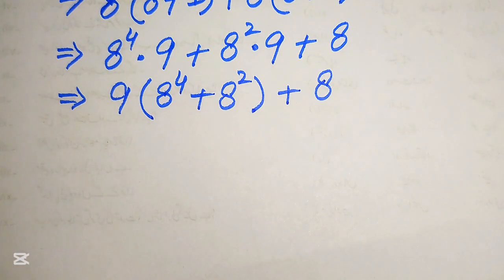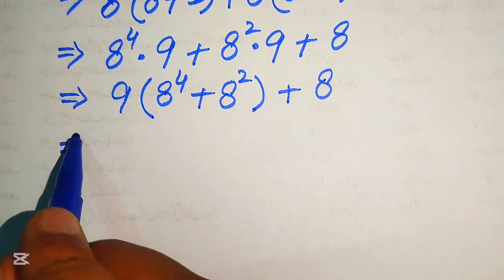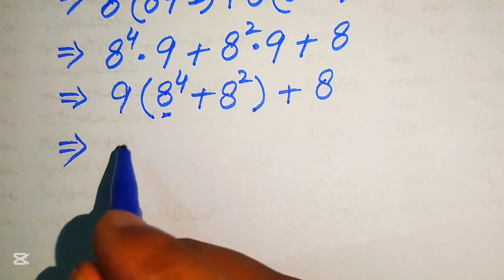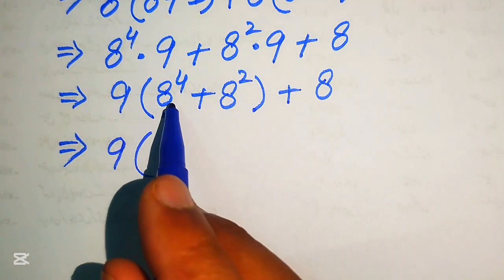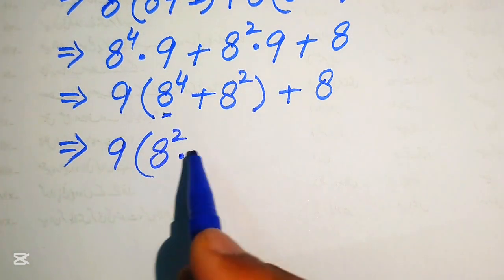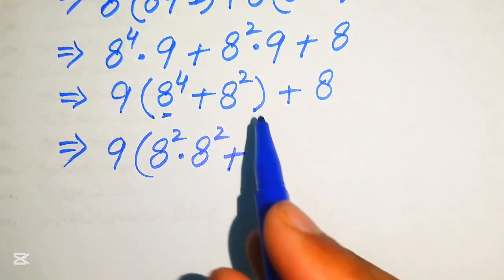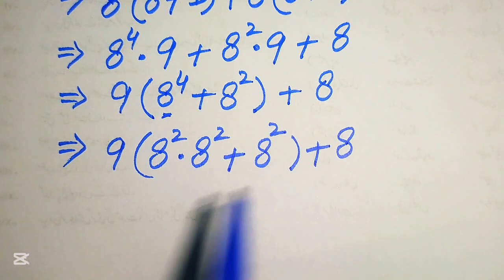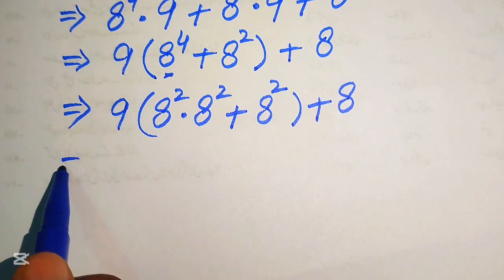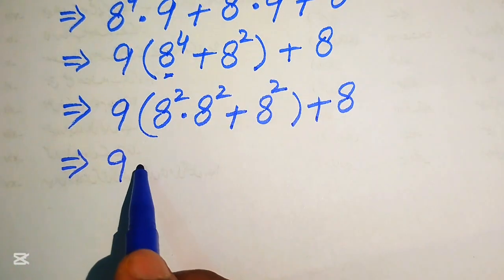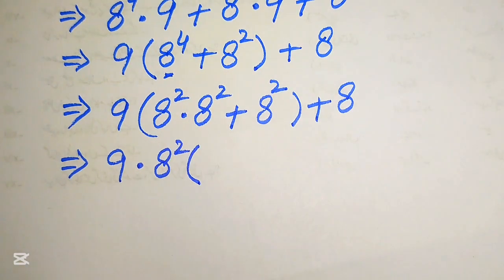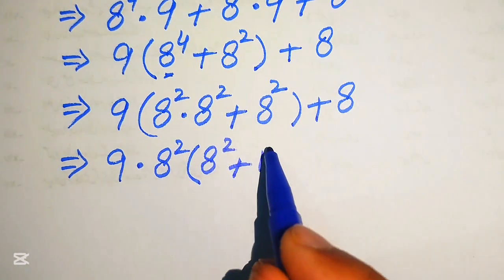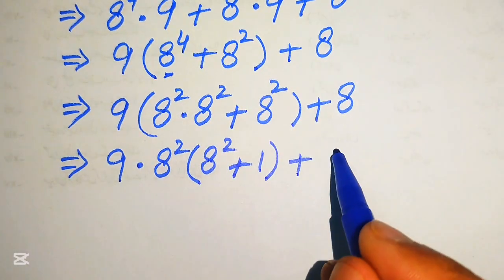Now we need more simplification. We break 8 to the power of 4 and write it as 8 squared multiplied by 8 squared, plus 8 squared, plus 8. We again take out 8 squared as the common factor, leaving us with 8 squared plus 1, plus 8.